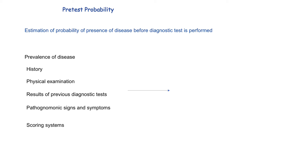As pre-test probability is based on several parameters, two observers can estimate different pre-test probabilities for the same clinical situation. In some situations like DVT and pulmonary embolism, we have scoring systems, and based on these scoring systems we can calculate exact percentage of pre-test probability with greater, less inter-observer variation.